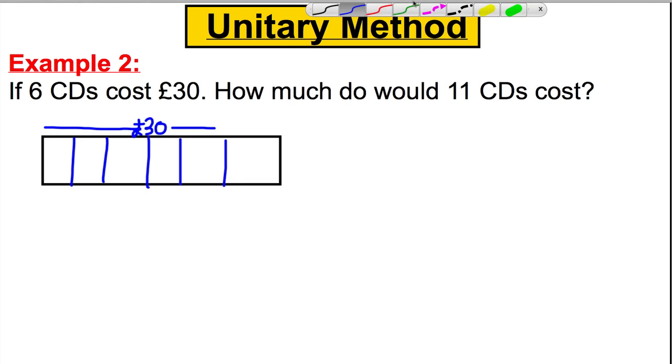What goes in each box? Well, clearly 5 must, because 5, 10, 15, 20, 25, 30. So clearly we know that 1 CD is equal to £5.